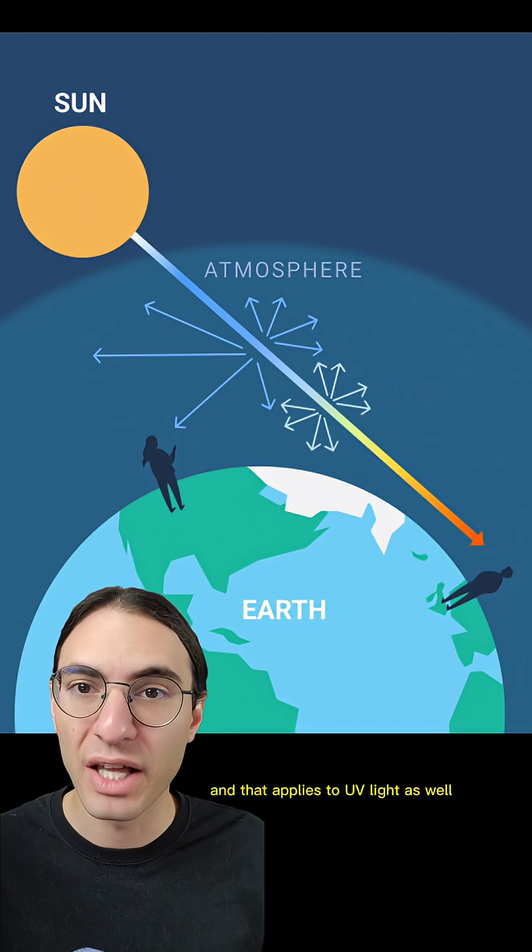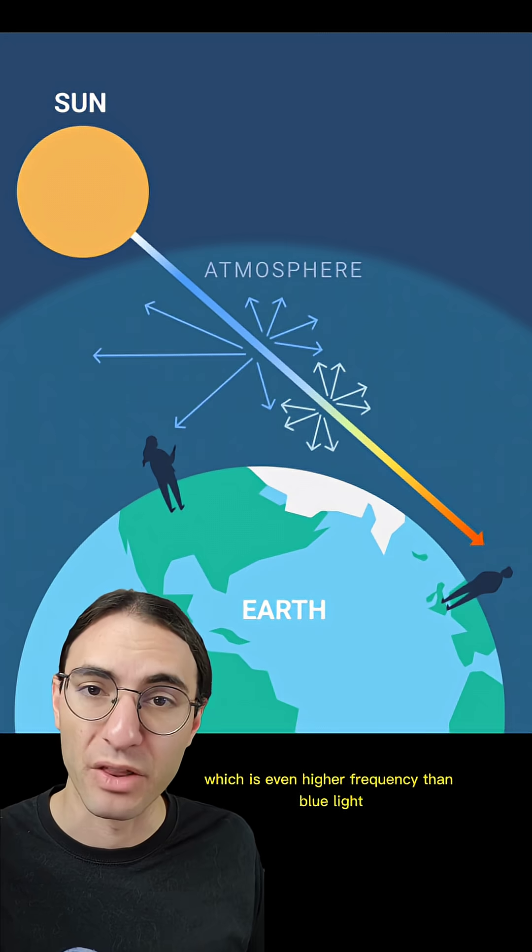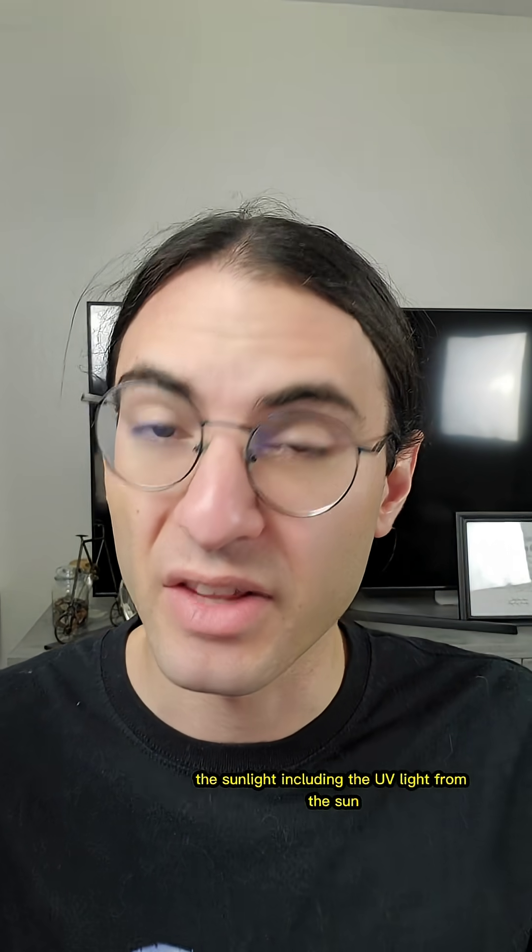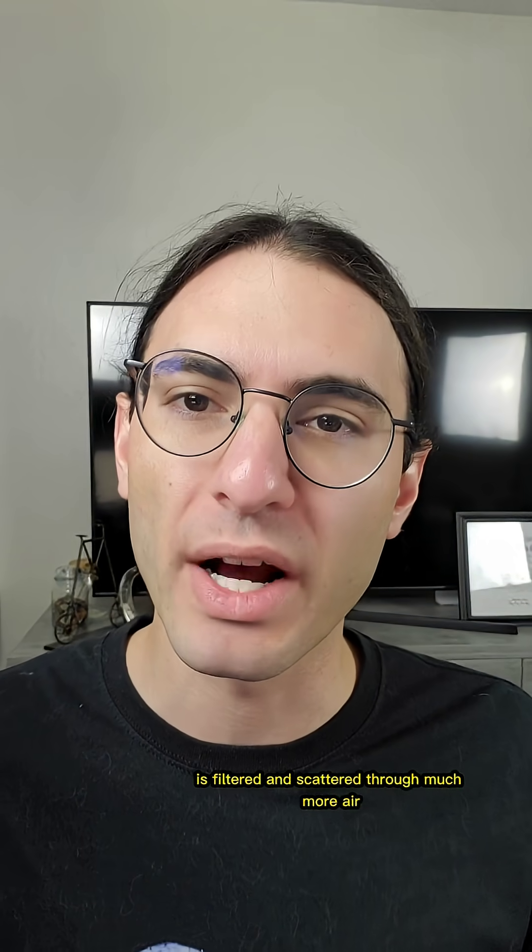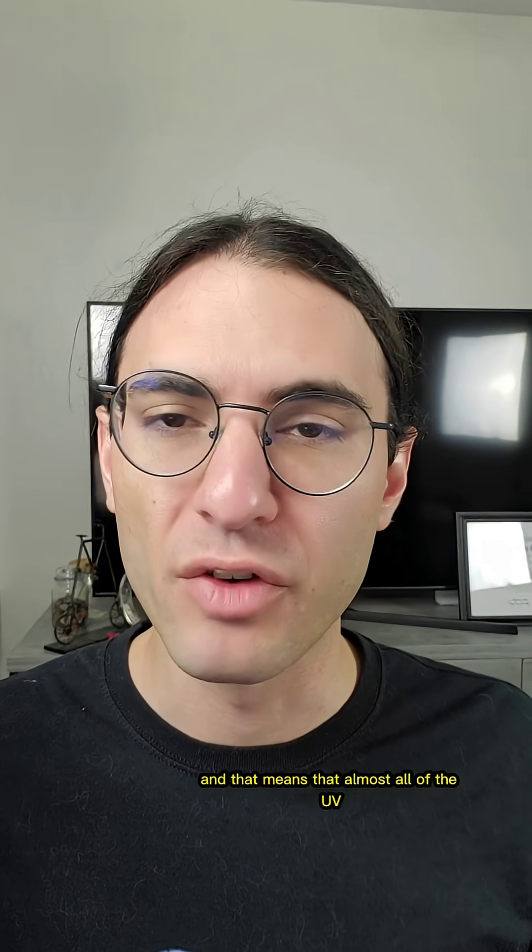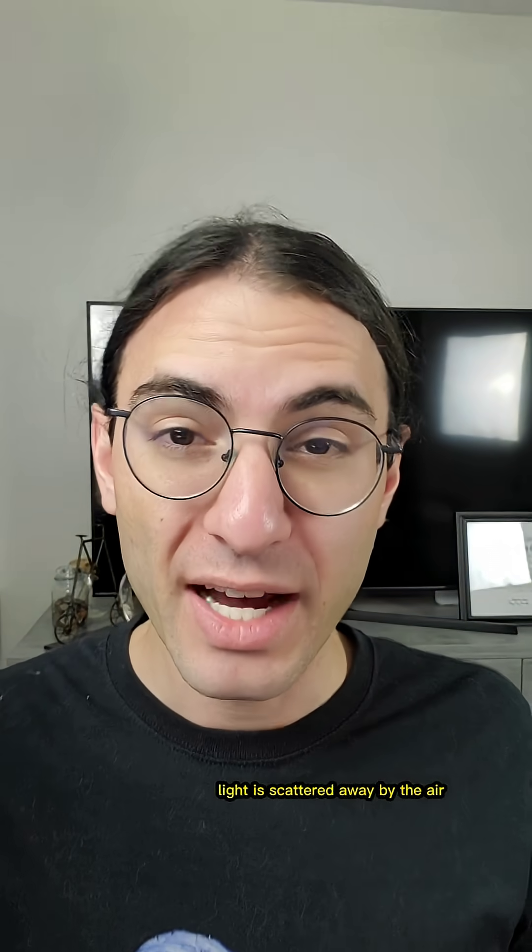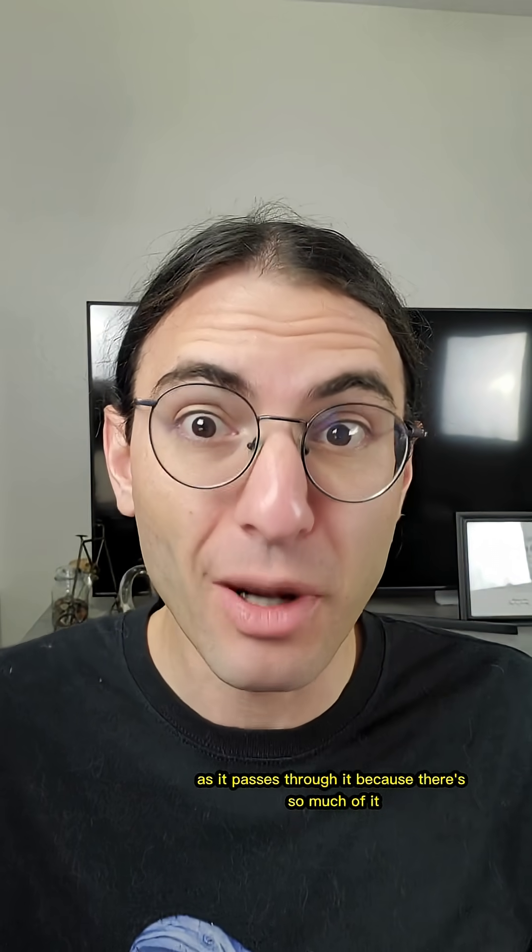And that applies to UV light as well, which is even higher frequency than blue light. So, when the sun is low in the sky, the sunlight, including the UV light from the sun, is filtered and scattered through much more air than when the sun is high in the sky. And that means that almost all of the UV light is scattered away by the air as it passes through it because there's so much of it.